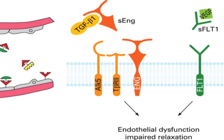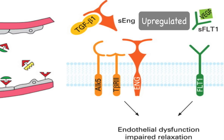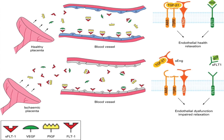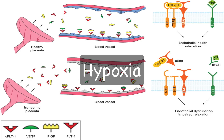Production of placental anti-angiogenic factors, specifically soluble FMS-related tyrosine kinase 1 and soluble endoglin, have been shown to be upregulated in pre-eclampsia. These placental anti-angiogenic factors are released into the maternal circulation. Their actions disrupt the maternal endothelium and result in hypertension, proteinuria, and other systemic manifestations of pre-eclampsia. The molecular basis of placental dysregulation of these pathogenic factors remains unknown.